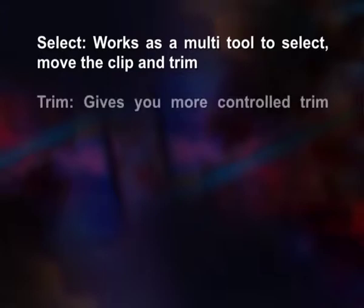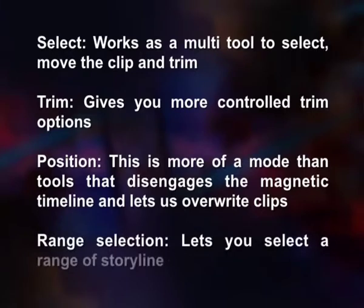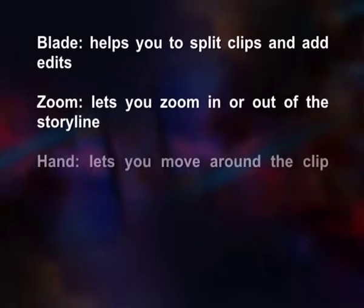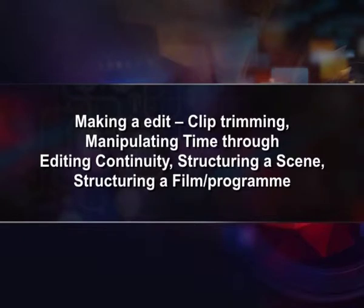Storyline tools. FCPX gives an array of tools to perfect your edit, all available in the toolbar panel. The tools include: Select, which works as a multi-tool to select, move, and trim clips; Trim, which gives more control over trim options; Position, which disengages the magnetic timeline and lets you overwrite clips; Range Selection, which lets you select a range of the storyline; Blade, which helps you split clips and add edits; Zoom, which lets you zoom in or out of the storyline; and Hand, which lets you move around the clip position in the viewer once zoomed in.